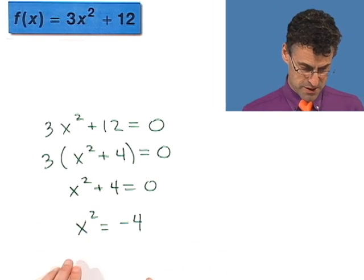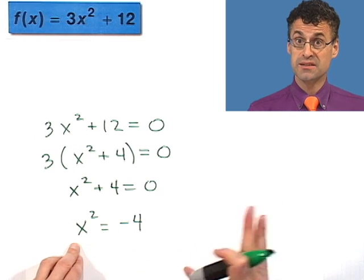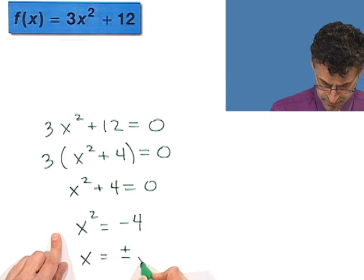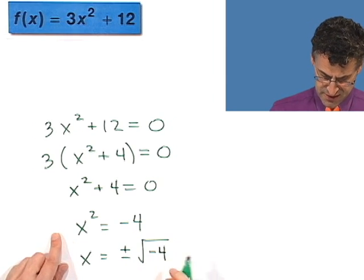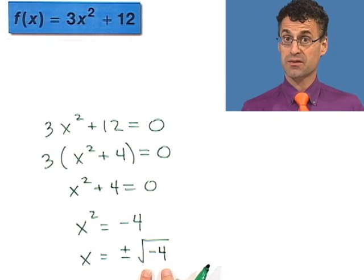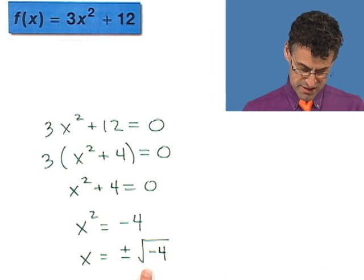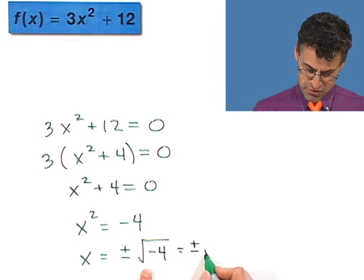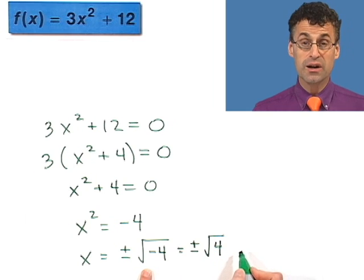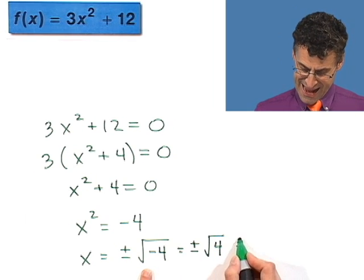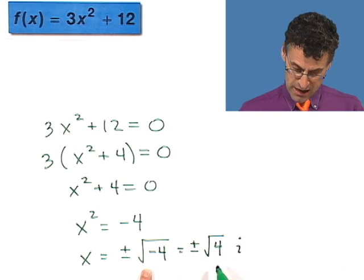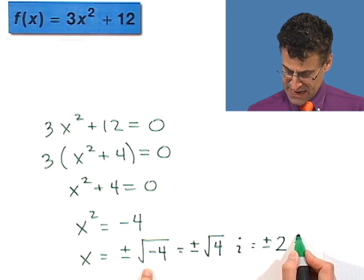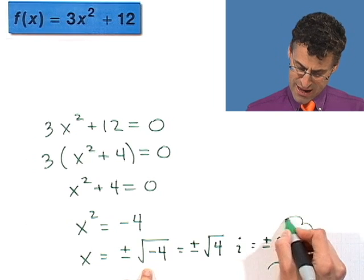And already you can see I'm a little bit nervous because when I take the positive or negative square root, I'm taking it of a negative number, namely negative 4. So what does that equal? Well, that equals plus or minus, and so that's the square root of 4 times the square root of negative 1, which is i. And the square root of 4, of course, that's 2. So it's plus or minus 2i. So there's two answers.